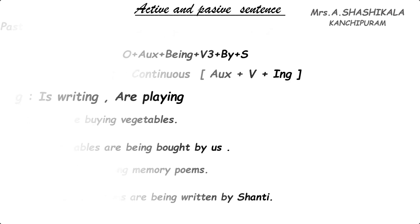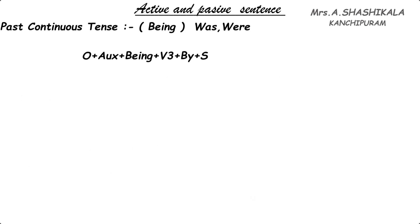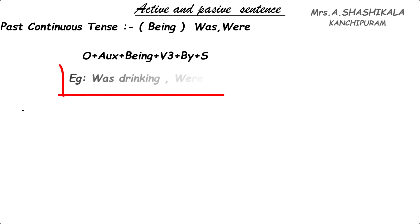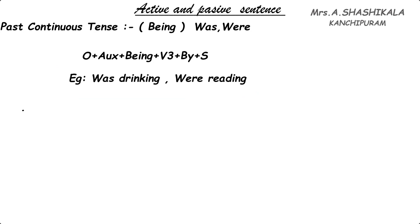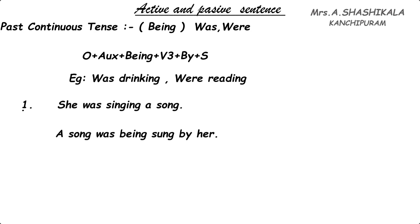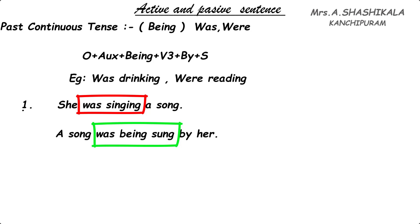In the past continuous tense, it is the same as the present, but the auxiliary alone is going to be changed. In the past continuous, the verb form in active is 'was drinking' or 'were reading'. We are going to use 'being' to change from active to passive. See the first example: 'She was singing a song.' 'Was singing' is the verb, 'she' is the subject, 'a song' is the object. So the answer is: 'A song was being sung by her.'